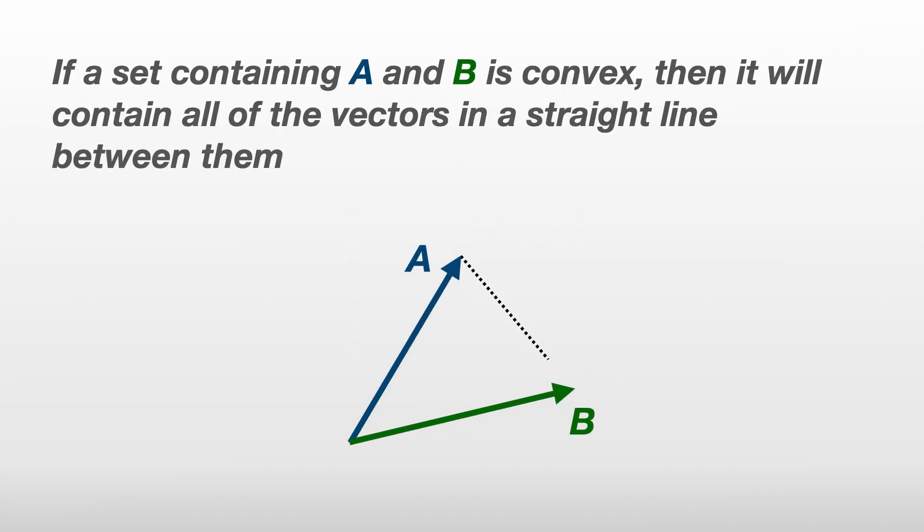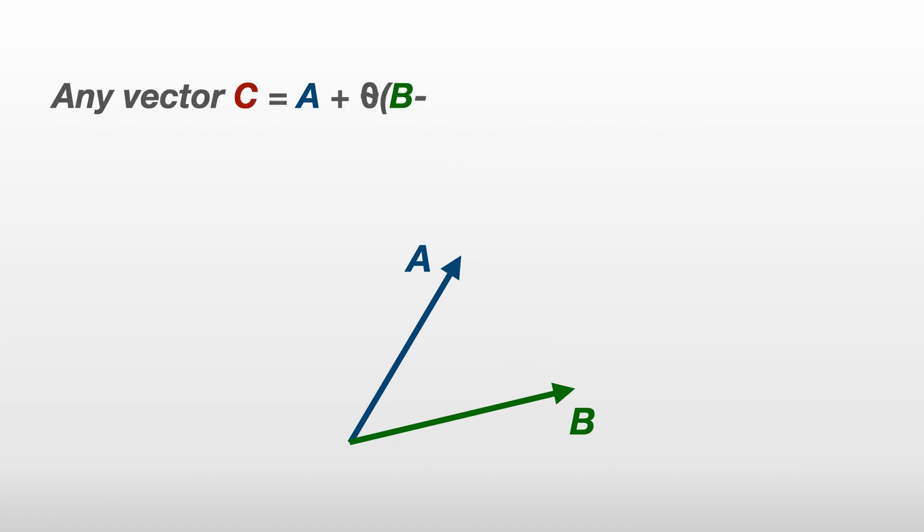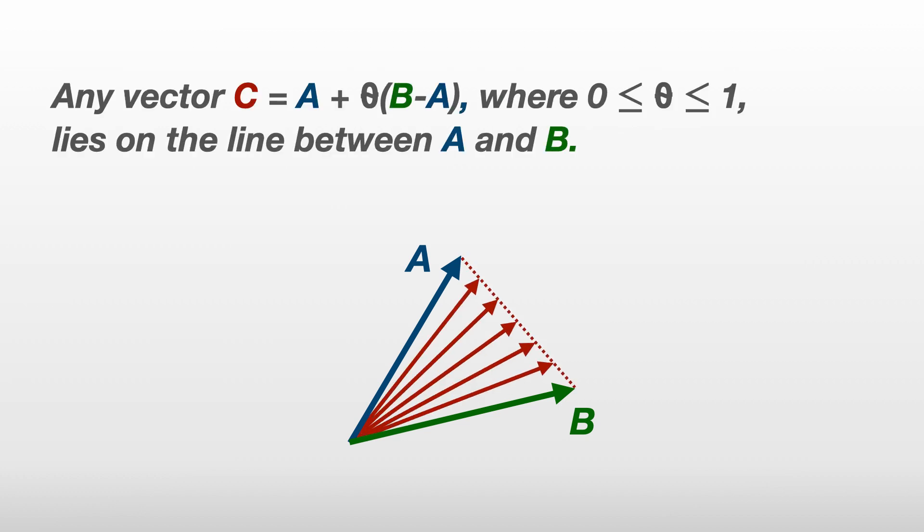In the same way as we've seen for convex shapes, if a set containing two vectors a and b is convex, then it will also contain all the vectors on a straight line between them. We can write these vectors as c equals a plus theta times b minus a, where theta is just a number between 0 and 1.